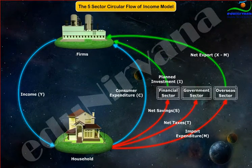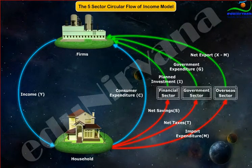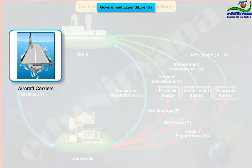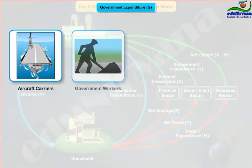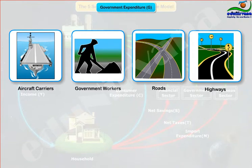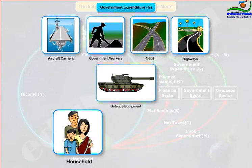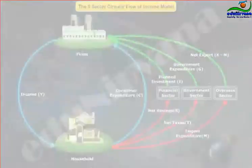Third, government spending (G) — the spending by all levels of government on goods and services: aircraft carriers, government workers, roads, highways, defence equipment, and so forth. Precisely, the spending that governments do for the public good, that is, for households and firms.